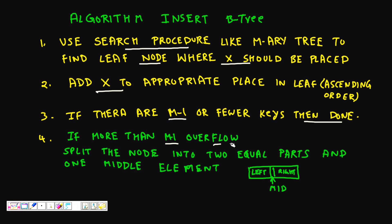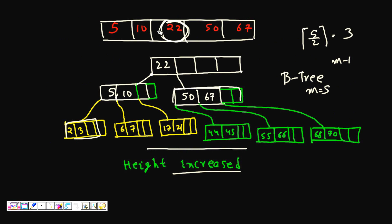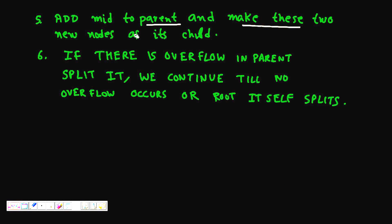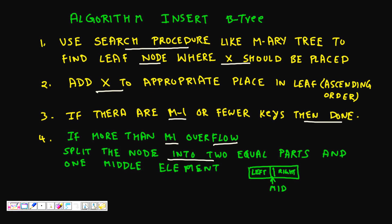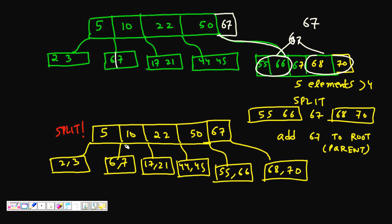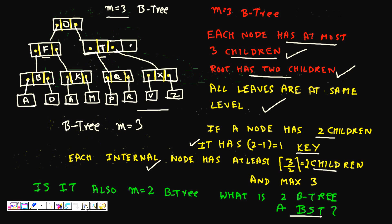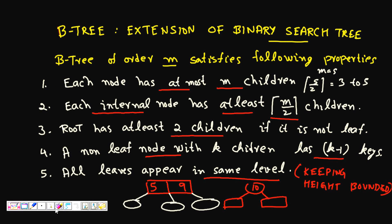If the leaf overflows (has more than M minus one keys), split the node into two equal left and right parts, and the middle element becomes the separator pushed up to the parent. Then add that middle element to the parent and make the two new nodes its children. If the parent also overflows, split it and continue this process up the tree until there is no overflow, or until the root itself splits — in which case the height of the tree increases.